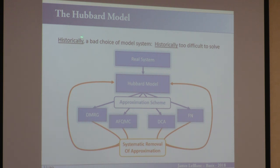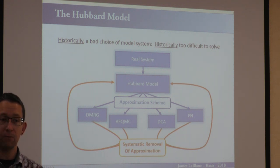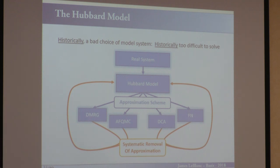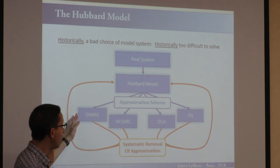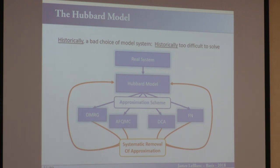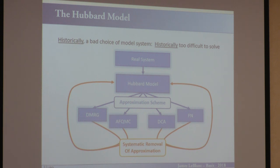The Hubbard model has been historically a very bad choice of model system. We wanted to take a real system, say it's too hard, and propose a model system. But the Hubbard model is not a good model system because it doesn't hit the criteria that we can solve it with some direct numerical tool. So there's an additional level of abstraction required — some level of an approximation scheme. All of those numerical techniques exist in some approximation scheme that take it from an intractable problem to an actually solvable one. The goal is to have some tuning knob — a parameter that allows you to systematically remove that approximation.